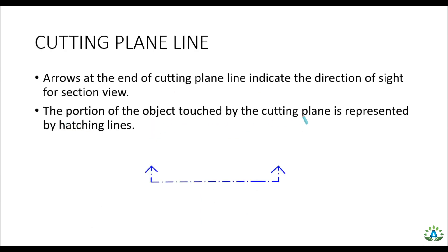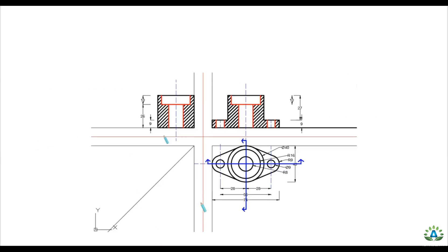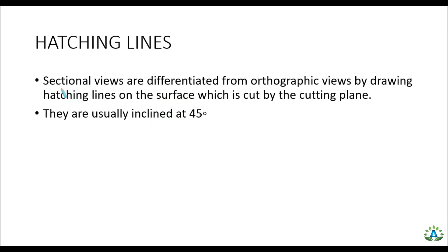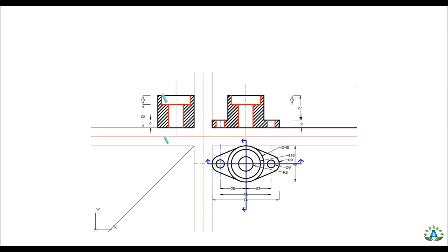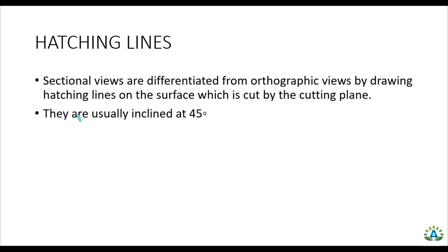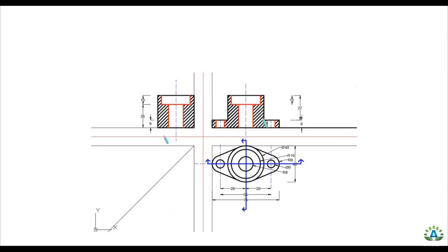The portion of the object touched by the cutting plane is represented by hatching lines. Sectional views are differentiated from orthographic views by drawing hatching lines on the surface which is cut by the cutting plane. Hatching lines are usually inclined at 45 degrees.